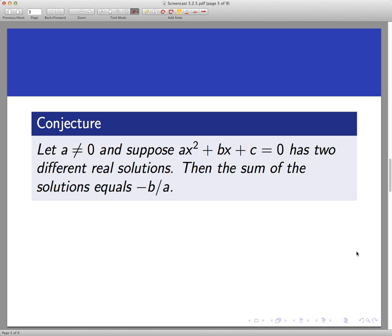And suppose that this equation ax² + bx + c = 0 has two distinct or different real number solutions. Then we claim that the sum of those solutions always equals -b/a.